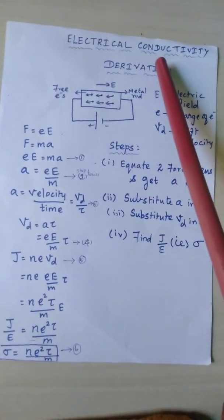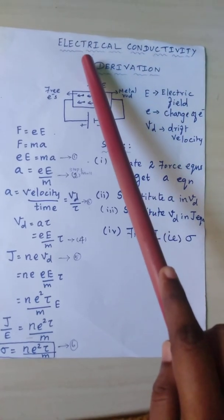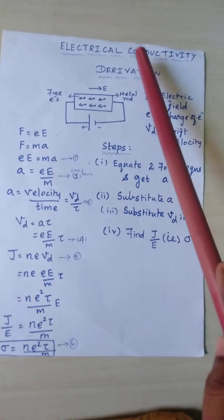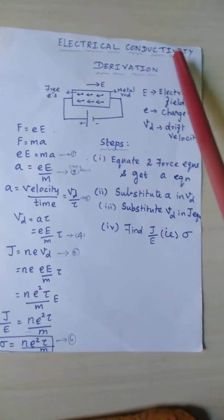Today I am going to explain electrical conductivity derivation. So first, what do you mean by electrical conductivity? We all know that electrical conductivity is the ability of a material to conduct current.